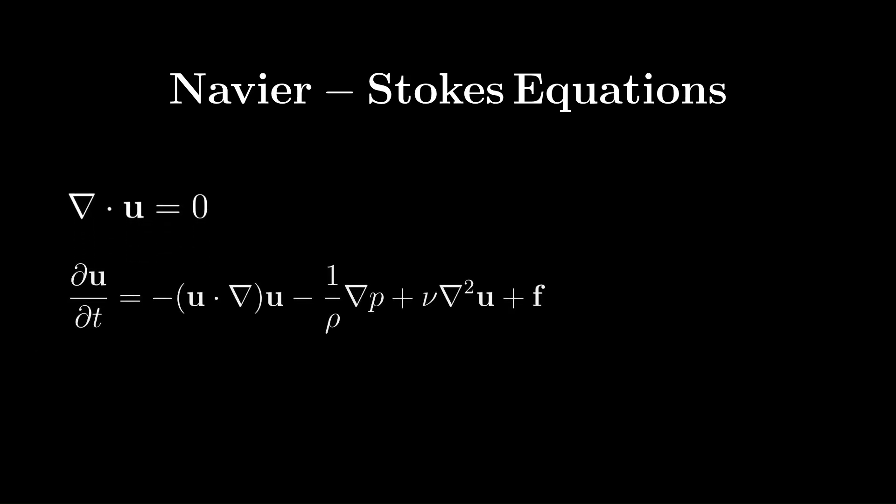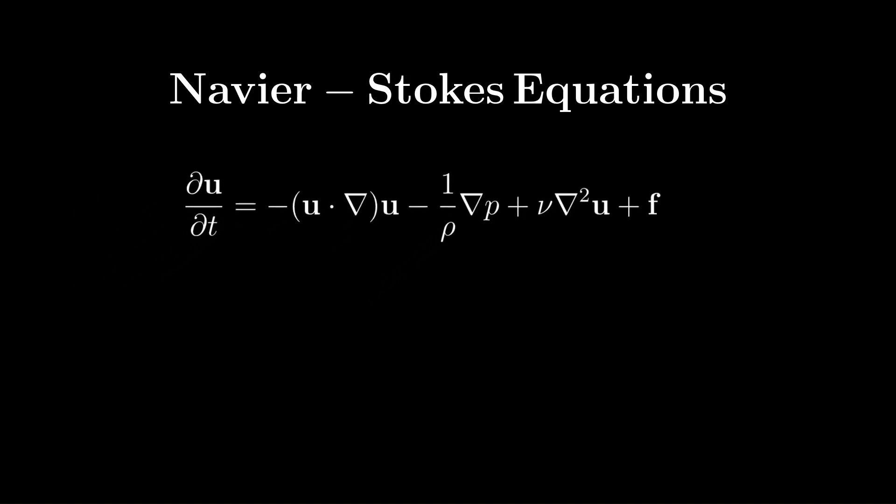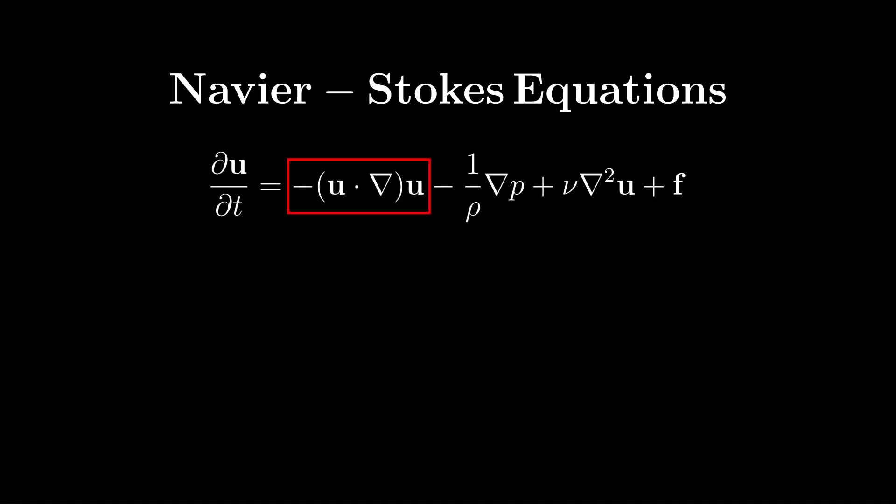The second equation is a little bit longer, describing how the velocity field u changes over time. The first term, u dot product gradient times u, represents the convection of the fluid. This term accounts for how the fluid's velocity changes due to the motion of the fluid itself.